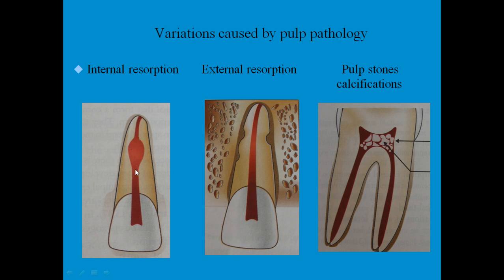Other variations include internal resorption — ballooning of the root canal within the tooth — which requires prior knowledge by observing an X-ray. There is also resorption of bone due to pulpal pathosis. Another commonly found variation is pulp stones or calcifications. Sometimes after removing the roof of the pulp chamber, you do not see the dark color of the floor — this is due to pulpal calcifications, which must be removed to gain access into the root canals.